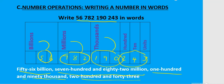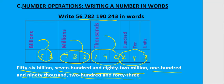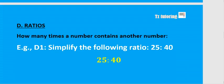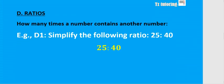Let's move on to ratios. To simplify a ratio, look for a number that goes into both values. For 25:40, that number is 5. Divide both by 5: 25 divided by 5 is 5, and 40 divided by 5 is 8. So the simplified ratio is 5:8.